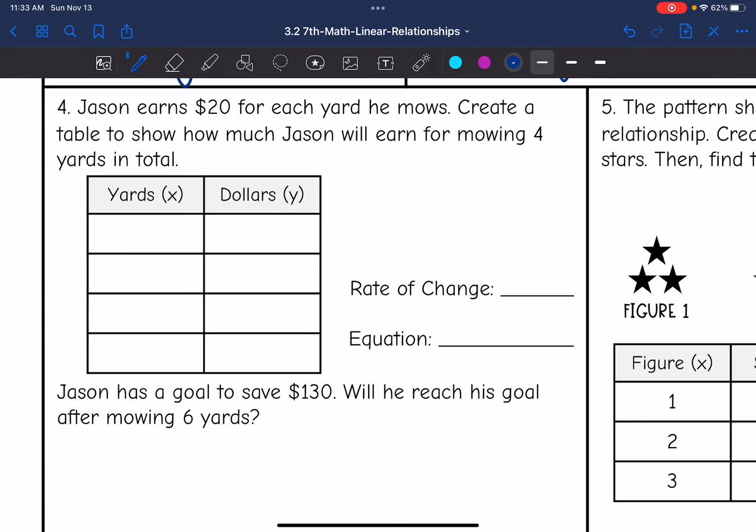Let's look at 4. Jason earns $20 for each yard he mows. Create a table to show how much Jason will earn for mowing 4 yards in total. So we want to figure out how much money Jason's going to earn for 1, 2, 3, or 4 yards. He's going to earn $20 each for the yards. So after 1 yard, that would be $20. After 2 yards, that would be $40, because 2 times 20 is $40. Then 3 times 20 is $60, and 4 times 20 is $80.